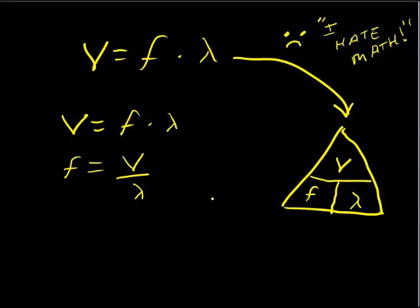Wavelength equals velocity divided by frequency, just like that. So there's the three ways to use that equation, arranged three separate ways.